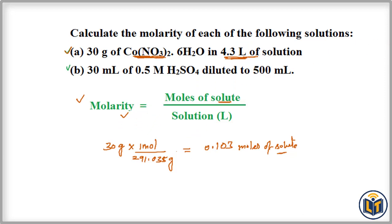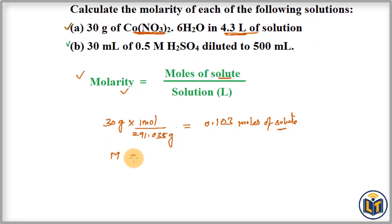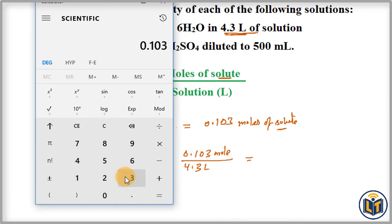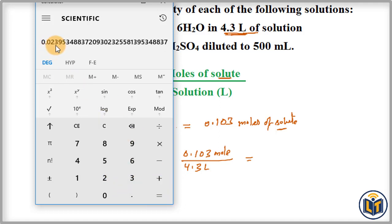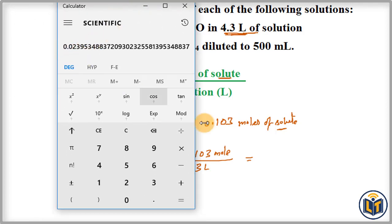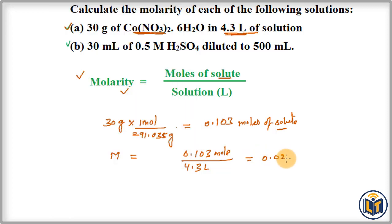Molarity M equals moles of solute, which is 0.103 moles, divided by the volume of solution, which is 4.3 liters. Dividing 0.103 by 4.3 gives us 0.024. Written to two significant figures, the molarity is 0.024 moles per liter. This is the concentration of the solution for Part A.